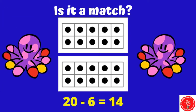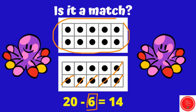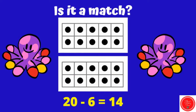Let's continue. Is this a match? 20 minus 6 equals 14. How many do we need to take away from 20? 6. 1, 2, 3, 4, 5, 6. How many are left? We have 10, 11, 12, 13, 14 left. This one is a match.